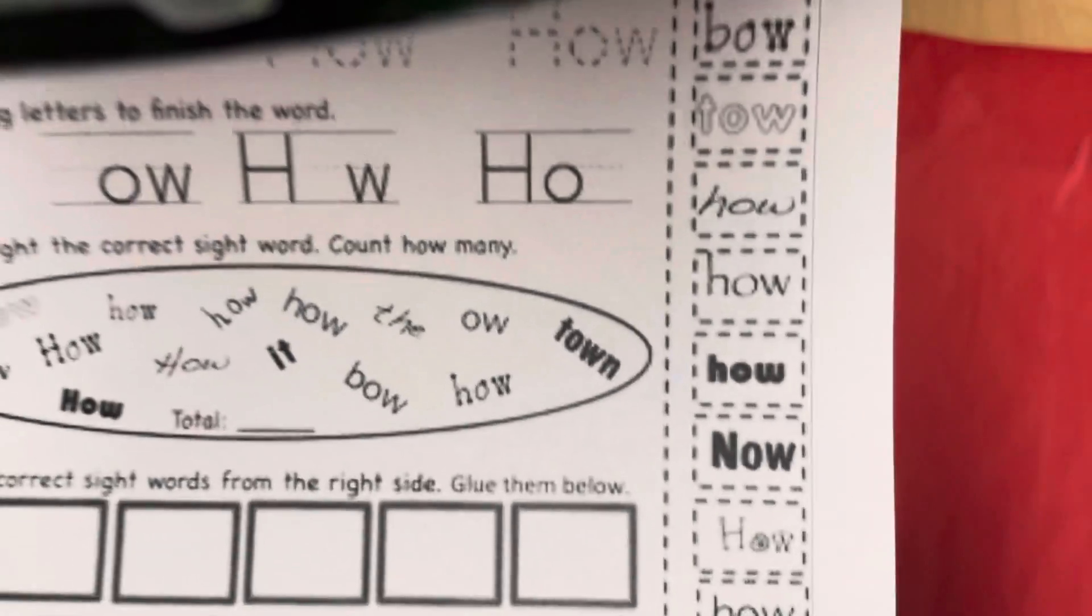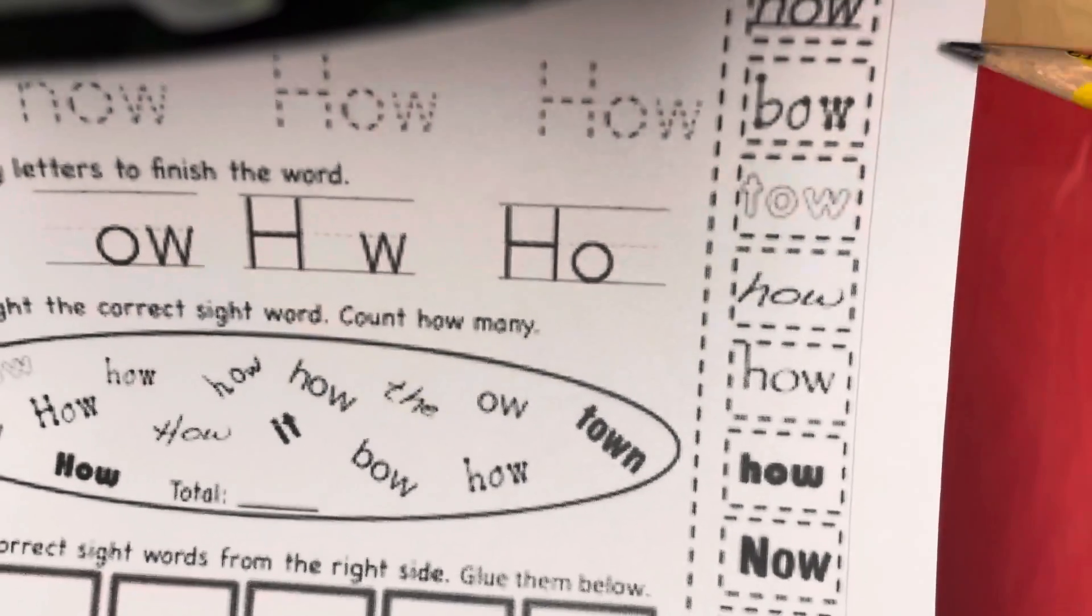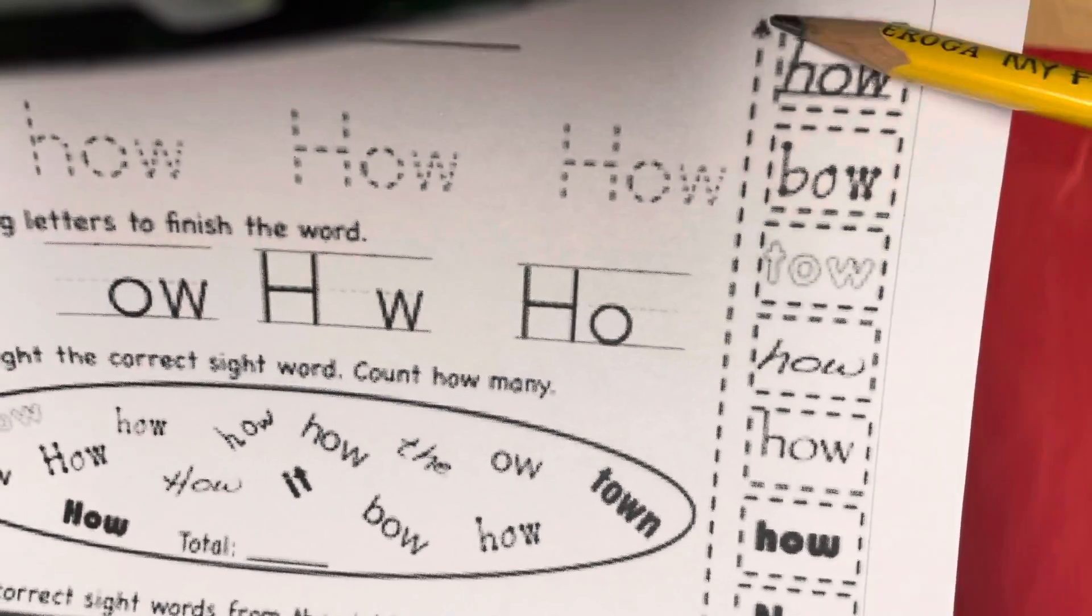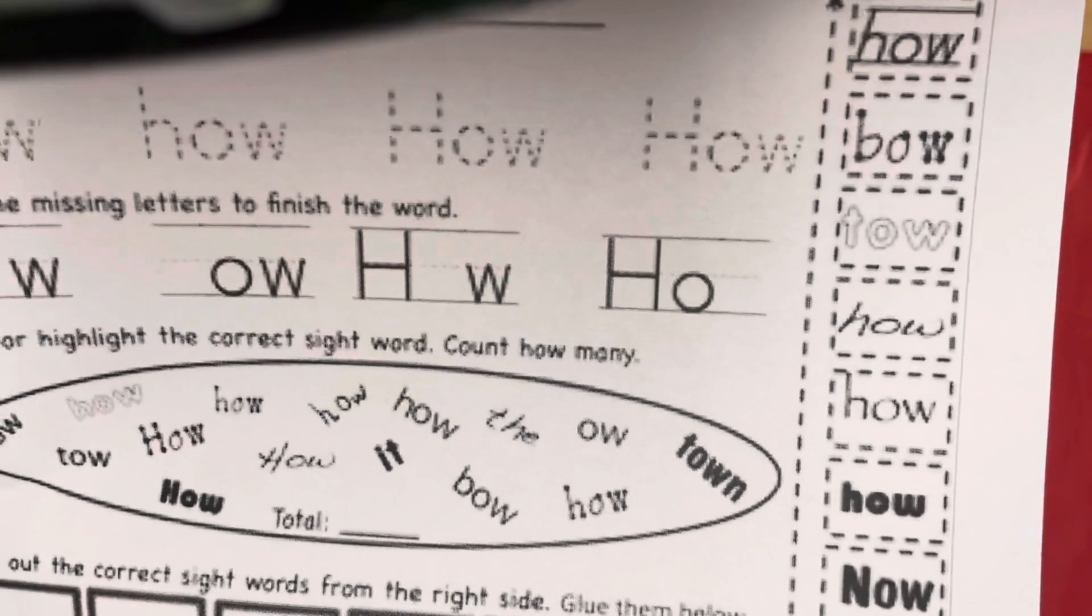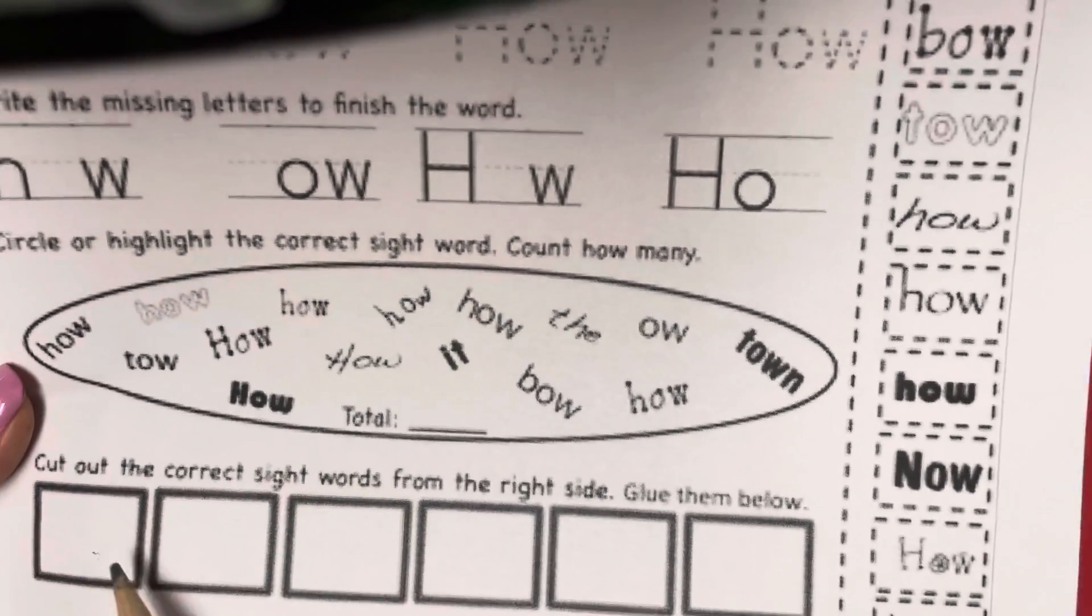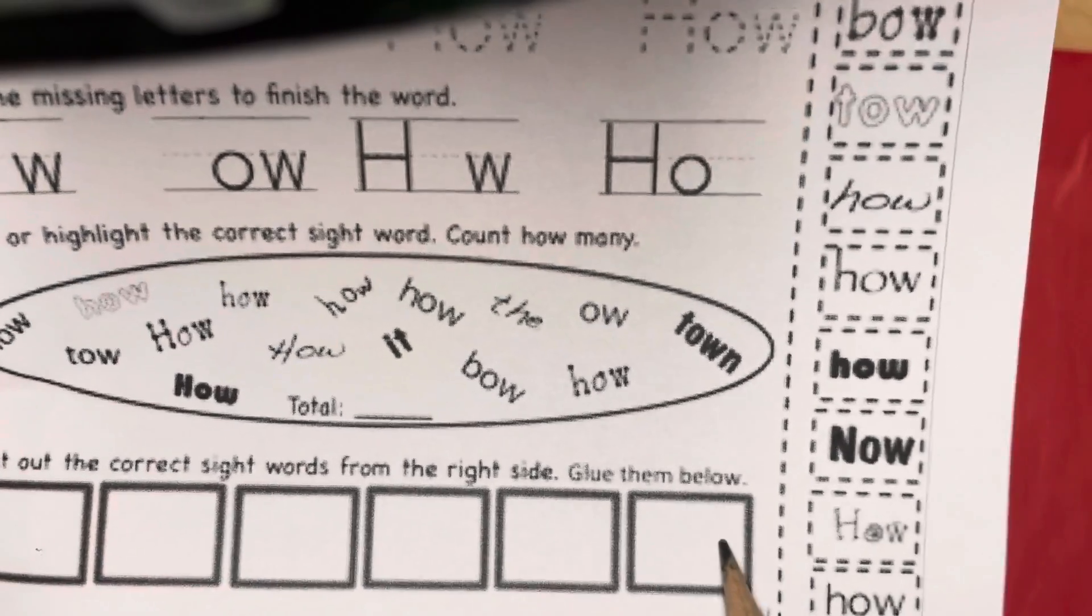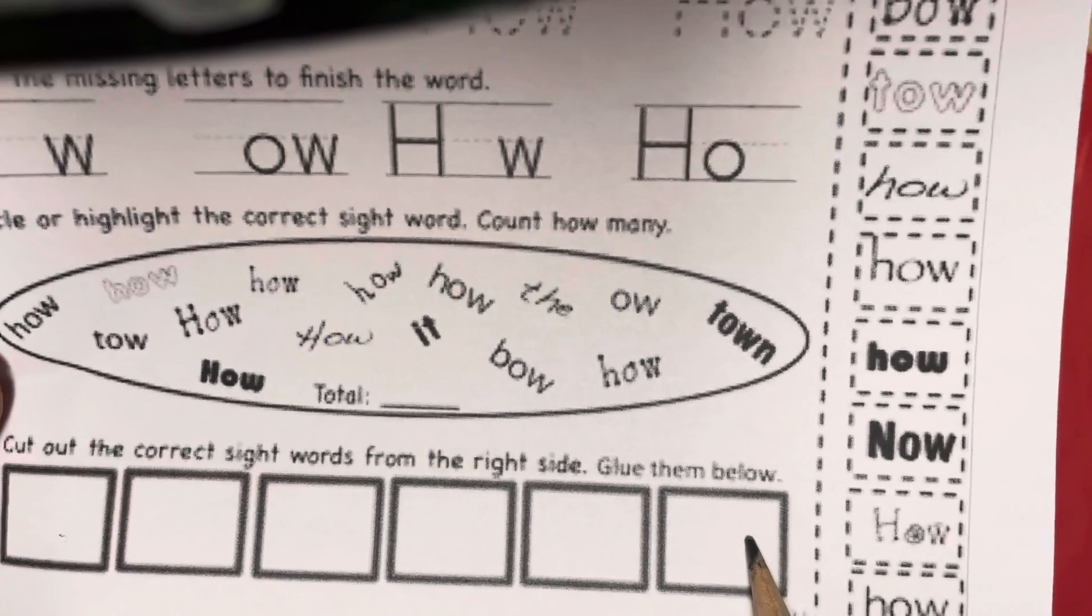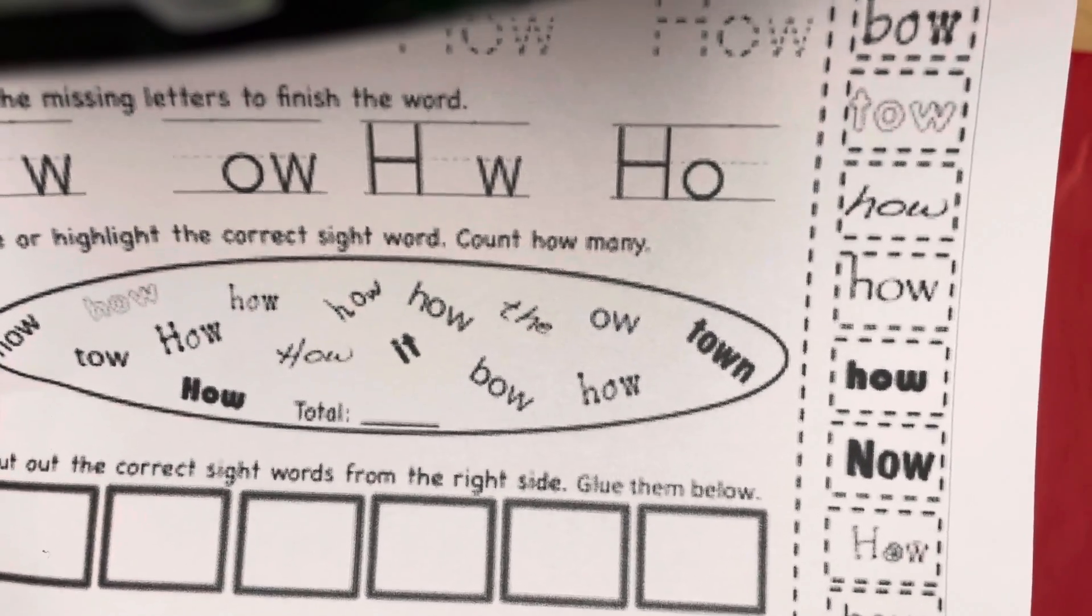And then over here last, you're going to get your scissors. And you're going to cut out each of the hows and glue them on here. Glue them right on here. So you have one, two, three, four, five, six how boxes.